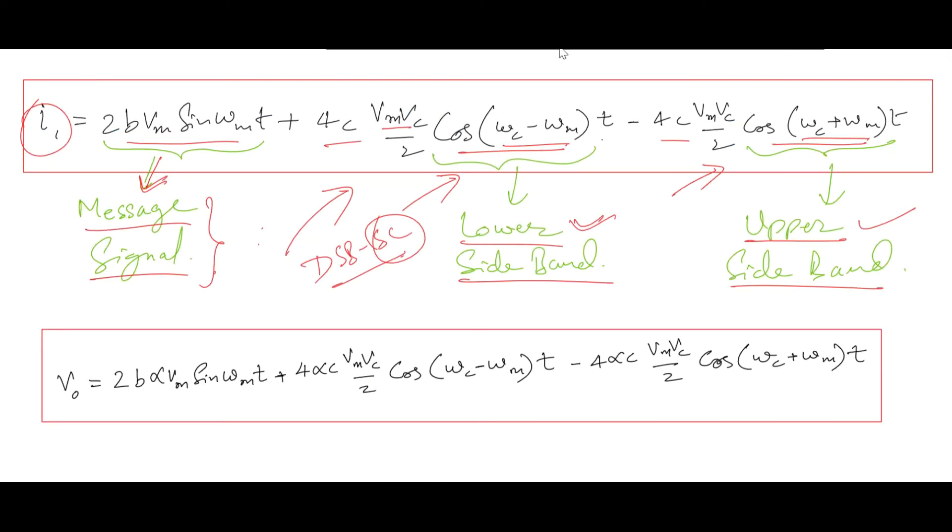Now voltage equivalent for this current can be easily calculated by multiplying this current value with some resistance α. So ultimately the output voltage or modulated output voltage will become equal to 2αBVM sin(ωMt) plus 4αCVMVC/2 cos[(ωC - ωM)t] minus 4αCVMVC/2 cos[(ωC + ωM)t].